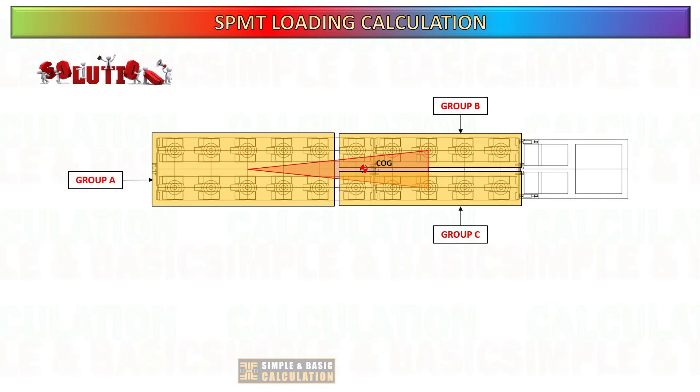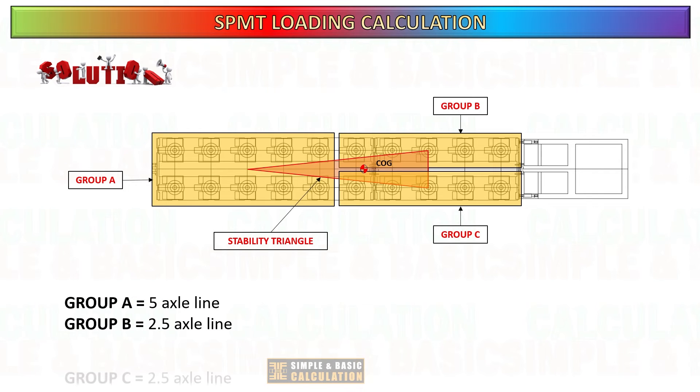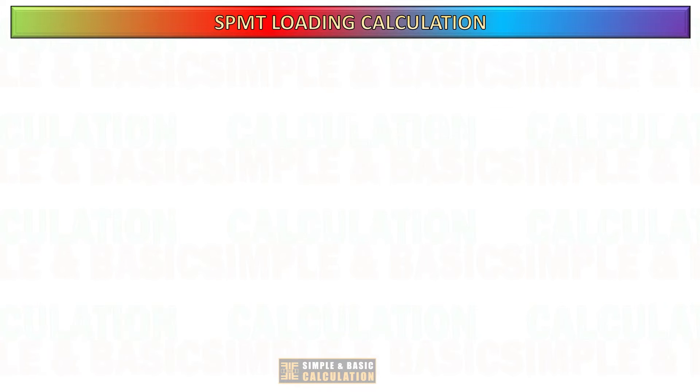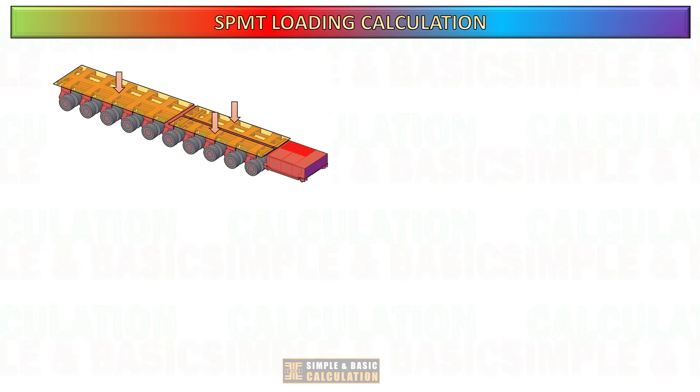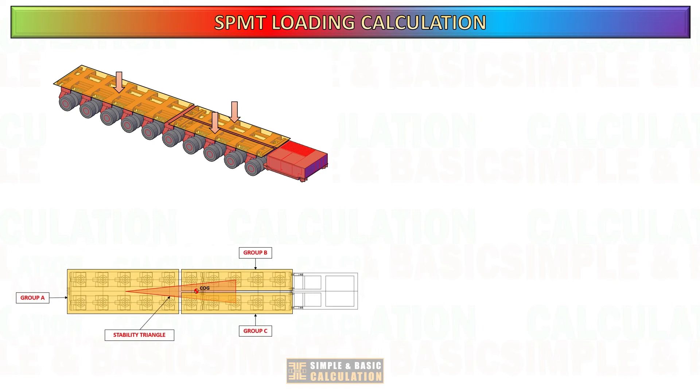The configuration of the axles on an SPMT plays a significant role in its stability. Different axle arrangements such as four-point or three-point grouping are used to evenly distribute the weight of the load and minimize the risk of imbalance. Now let us get the dimension of the stability triangle.